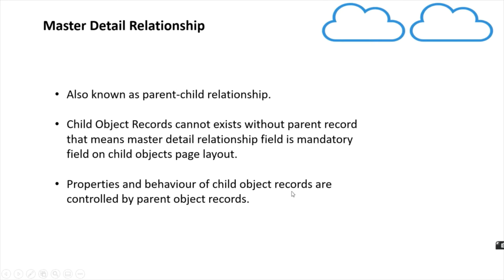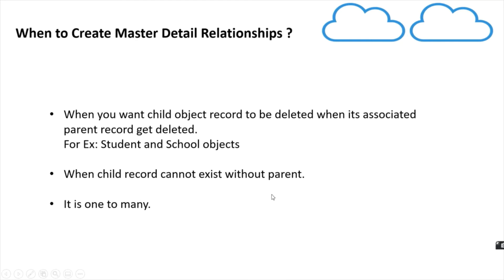Properties and behavior of child object records are controlled by parent object records — things like security settings and related stuff. We create master detail relationships when you want child object records to be deleted when their associated parent object record gets deleted. For example, if we delete a school, students should automatically be deleted. Also, when a child record cannot exist without a parent — a student should not exist if the school does not exist. Master detail relationship is one-to-many: one school can have many students.